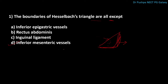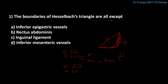Normally the anterior abdominal wall consists of eight layers. First is skin. Second is superficial fascia, which contains two layers: the fatty layer (Camper's fascia) and the membranous layer (Scarpa's fascia). Third layer is external oblique muscle. Fourth is internal oblique muscle. Fifth is transversus abdominis. Sixth is fascia transversalis. Seventh is extraperitoneal fat. Eighth is parietal peritoneum.